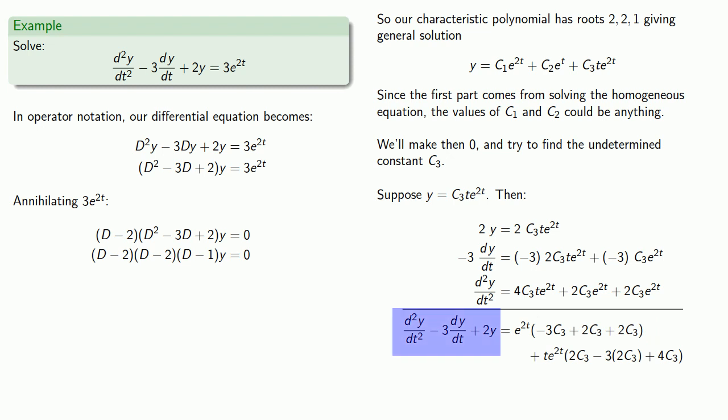Putting those together, this part is supposed to be equal to 3e^(2t). On the right-hand side, if we gather our coefficients, the coefficient of e^(2t) is going to be c₃ and the coefficient of te^(2t) is going to be 0. Comparing our coefficients, we see that c₃ is equal to 3.